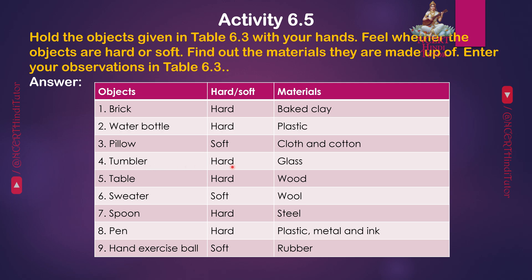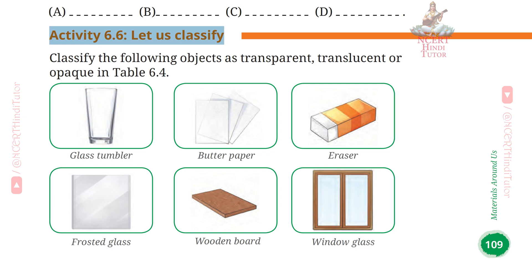4. Tumbler — Hard — Glass. 5. Table — Hard — Wood. 6. Sweater — Soft — Wool. 7. Spoon — Hard — Steel. 8. Pen — Hard — Plastic, metal and ink. 9. Hand exercise ball — Soft — Rubber. Activity 6.6: Let us classify.